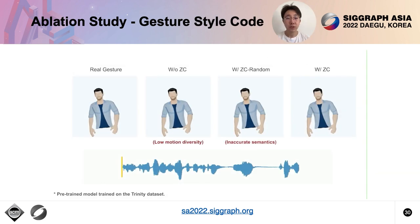We also studied the influence caused by the gesture style code, which can be considered as a fine-grained style. This demo shows the comparison of the system without gesture style code, randomly sampled style code, and the style code predicted by our learning-based interpreter.